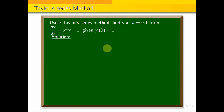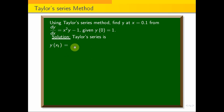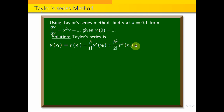This is the direct formula substitution problem. First we know the Taylor series formula: y(x1), or simply y1, is equal to y(x0) plus h over 1 factorial into y'(x0) plus h squared over 2 factorial into y''(x0) plus h cubed over 3 factorial into y'''(x0), plus so on — it keeps going.